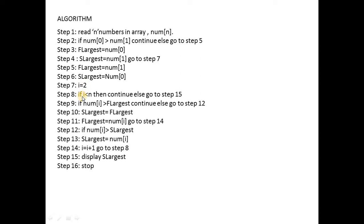When i becomes 3, if num[3] is not greater than first largest, then first largest doesn't change. Then you check whether num[i] is greater than second largest. If true, second largest equals num[i], because it is greater than second largest but less than first largest, making it the new second largest. You continue incrementing i until done, then display the second largest number.